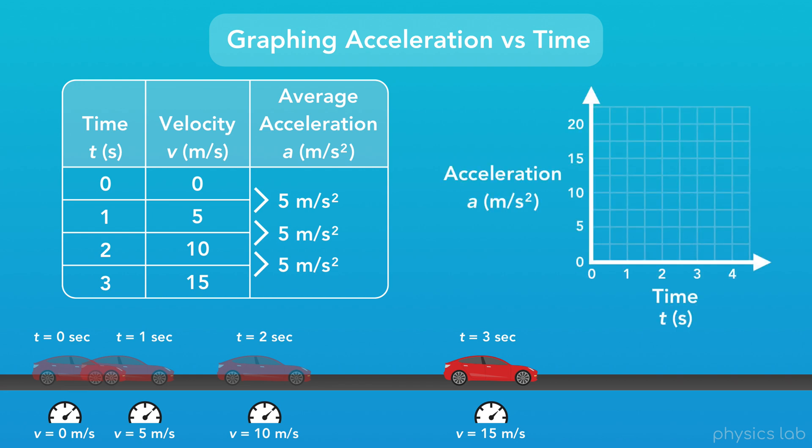So what would our graph of acceleration look like? As always, we have time along our horizontal axis, and now we have acceleration along the vertical axis.